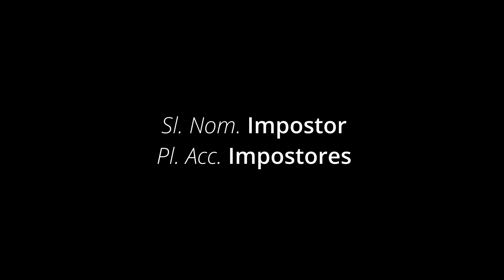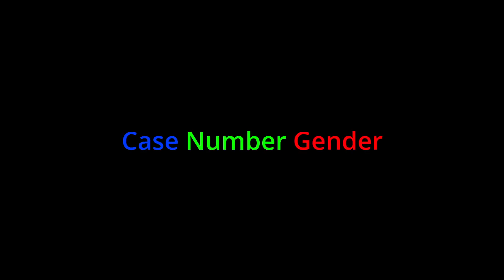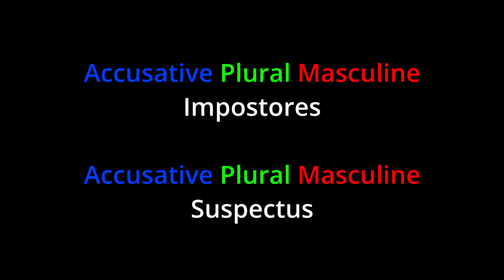Impostores is the plural accusative form of impostor. The next word, suspectus, is an adjective. In Latin, in order for an adjective to describe a noun, it must agree with the noun's case, number, and gender. As you can see, suspectus does in fact meet all of this criteria, and describes impostores. The final word here, et, simply means 'and.' In full, this sentence translates to: 'I believe in amogus and suspicious impostors.'